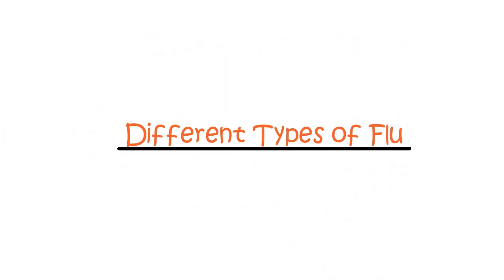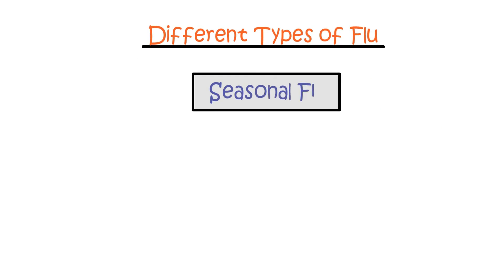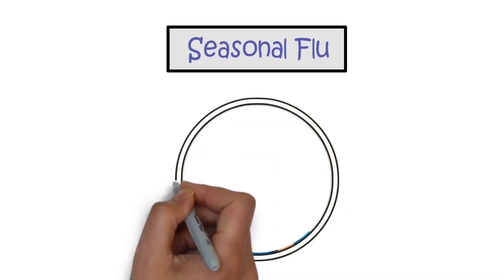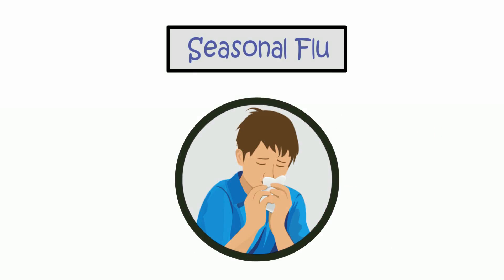Different Types of Flu. Seasonal Flu: Annually, a different strain of influenza virus triggers a flu outbreak, commonly referred to as seasonal flu.